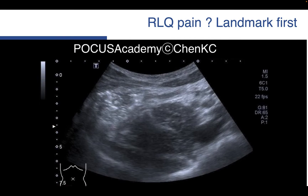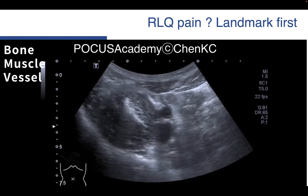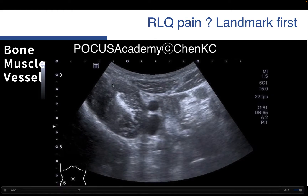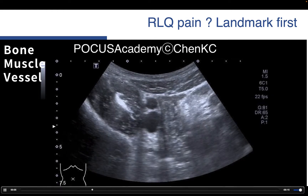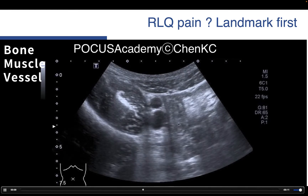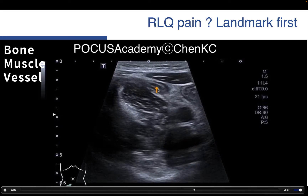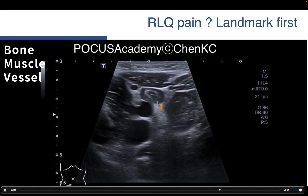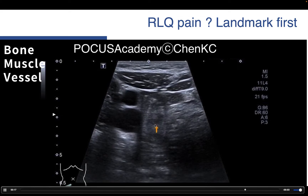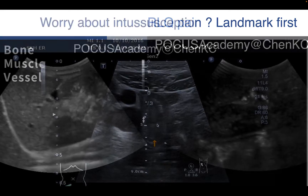When you encounter patients having right lower abdominal pain, I recommend to scan the landmark first. Recognize what landmark? The iliac bone, iliac psoas muscle, and iliac vessels, and scan around these regions. We can see these structures, and then shift to a linear transducer. We can see this distended appendix just lying immediately to the iliac vessels. It is appendicitis.